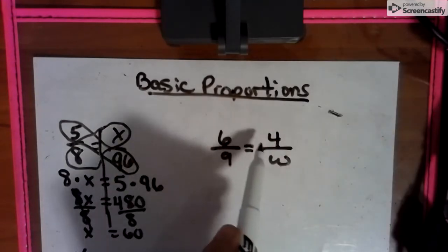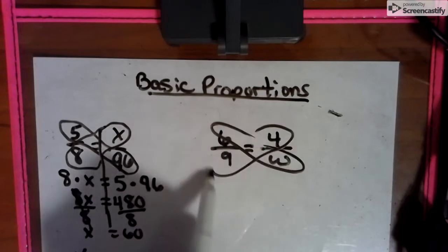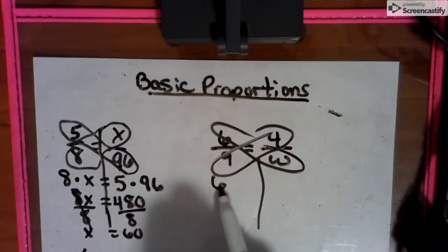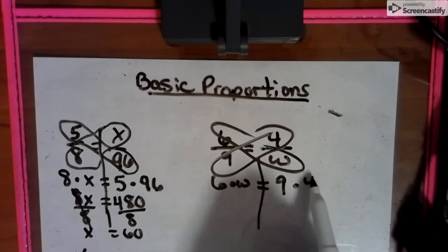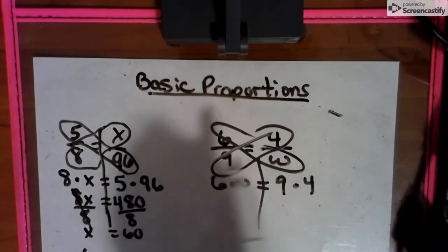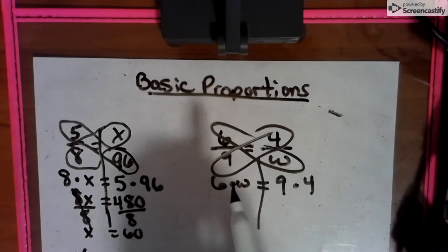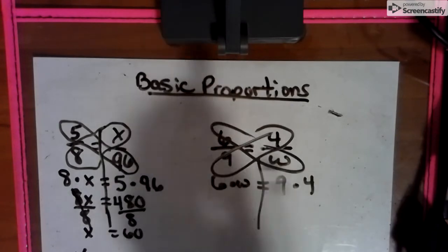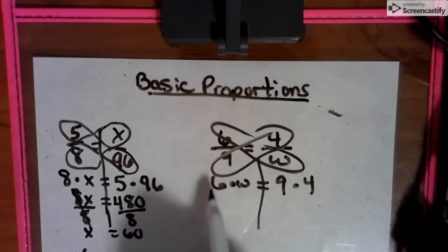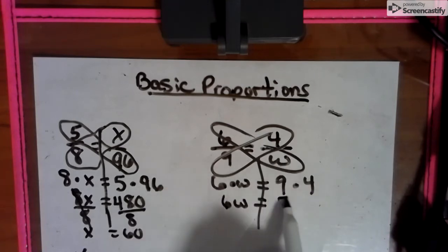So our missing piece is 60. So now we can look at this one. And we take our diagonals. And we have 6 times W equals 9 times 4. And this is the same setup every time. You pick a diagonal. You put it on one side. You pick another diagonal. You put it on the other side. It does not matter if the 9 times 4 is on this side or on the left. It doesn't matter as long as the 9 and the 4 go together and the 6 and the W go together. We put these together. We get 6W. We put these together. We get 36.